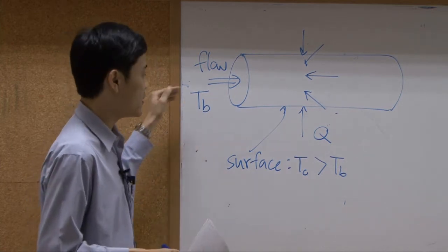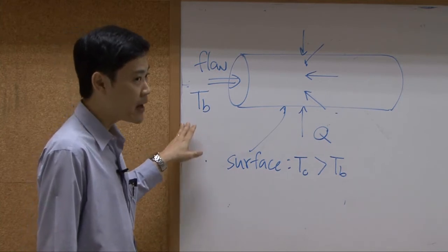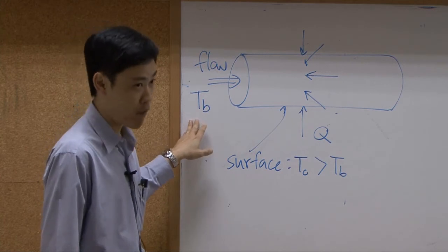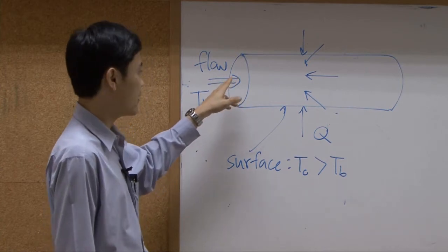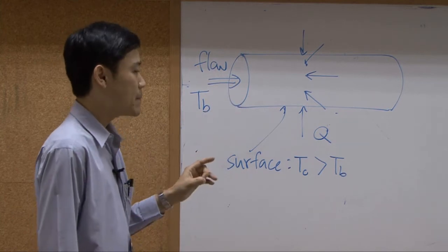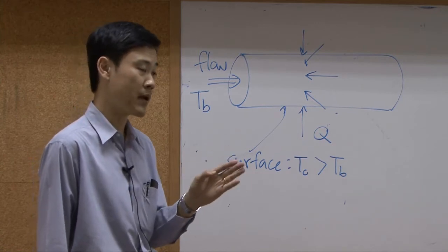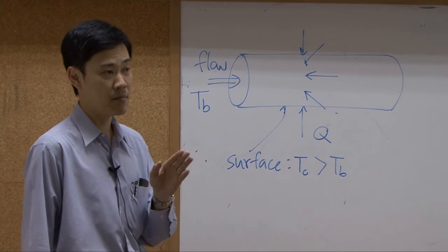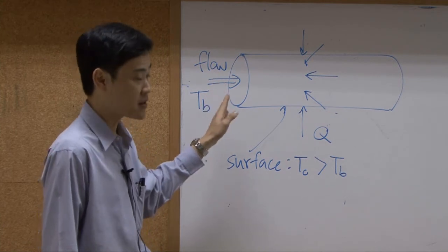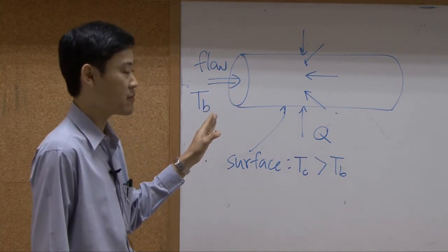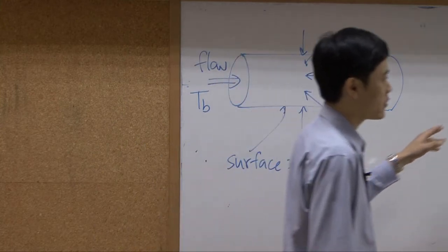Suppose the fluid coming into the pipe has a uniform temperature Tb. In reality, temperature within the cross-section area may vary — the surface may be hotter than the fluid inside. But we find the average value, since we are moving from microscopic balance to macroscopic balance. In macroscopic balance, everything in the same cross-section area is treated as having the same properties: same velocity, same temperature.